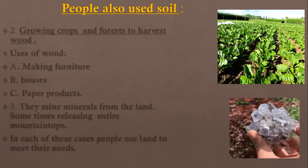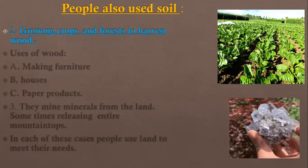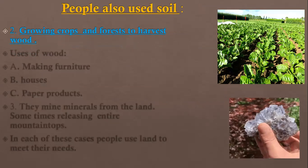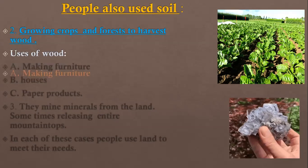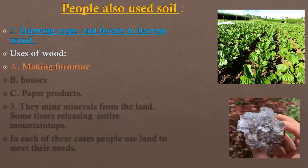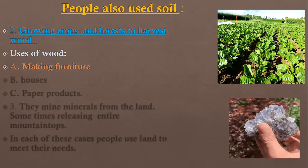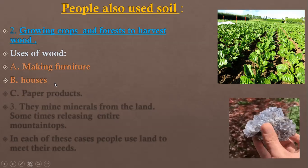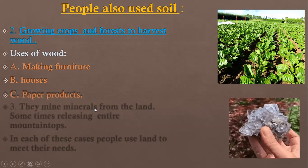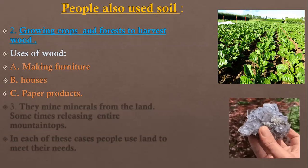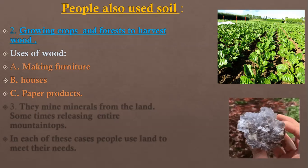People also use soil to grow crops and forests to harvest wood. Why do we need wood? To make furniture — such as desks, tables, chairs, and cardboards — all materials made up of wood. We can take wood from the logs of trees to make houses and homes. Paper products also come from trees and wood itself, from the xylem and phloem.